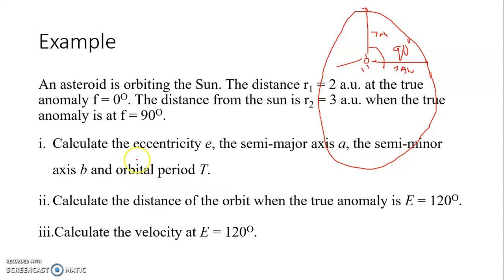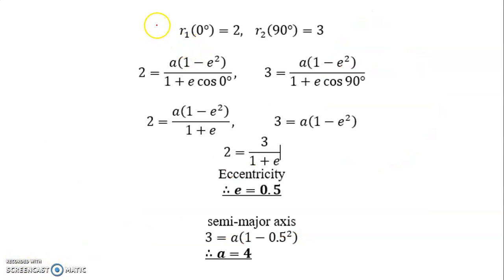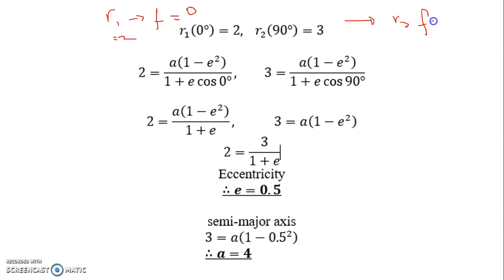We need to find the eccentricity, major axis, semi-minor axis, and orbital period — using the elliptical orbit equation — and also the velocity using the Vis-Viva equation. First, we know the initial position is r₁ where the true anomaly F = 0°, so r₁ = 2 AU. The next position is r₂ where F = 90°, so r₂ = 3 AU. We use the orbit equation to find the distance from the true anomaly.